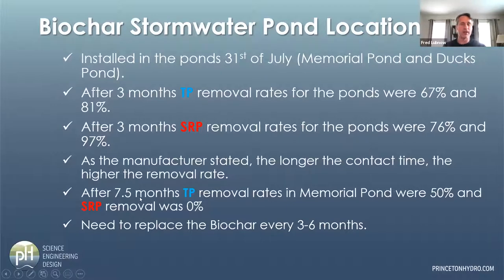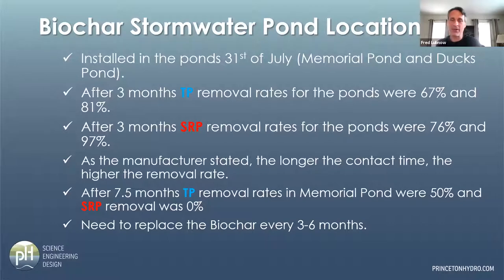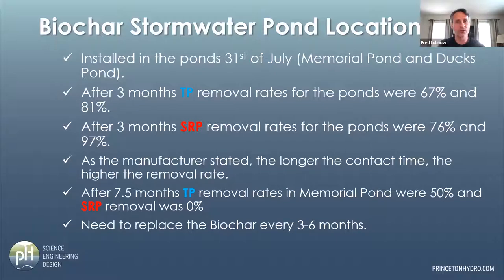We left the biochar in over the winter, and after seven and a half months we weren't getting any removal of dissolved phosphorus and were removing only about half of the particulate. You do have to replace it about once every three to six months. For lake communities installing them in stormwater ponds or beach areas, you could install them in April or May and if you get efficiency through September or October, you can remove that material and use it as mulch — a good way of handling excessive phosphorus in near-shore areas.